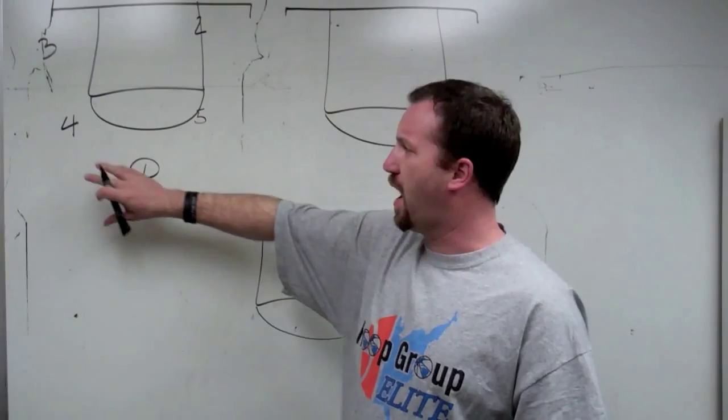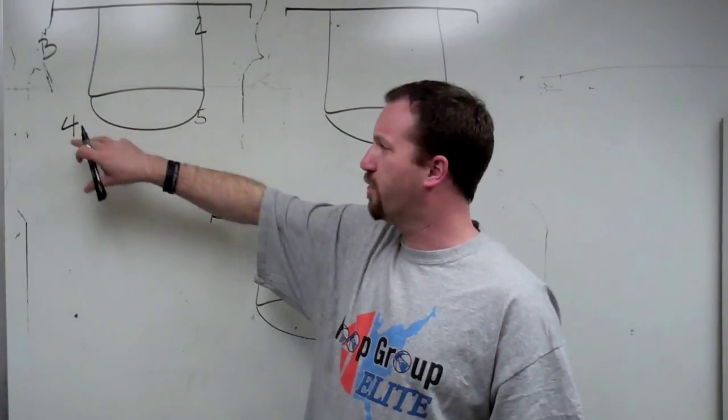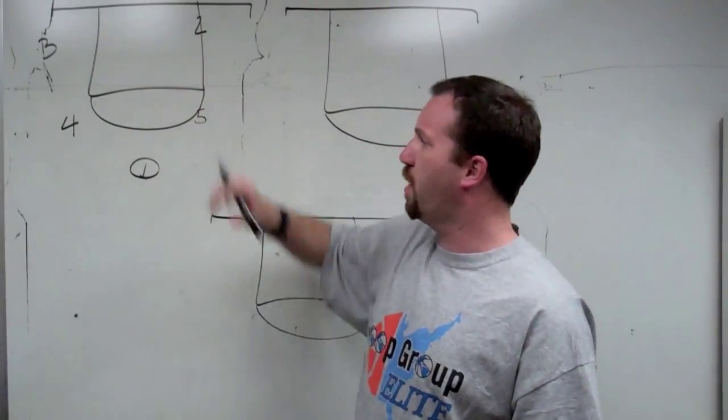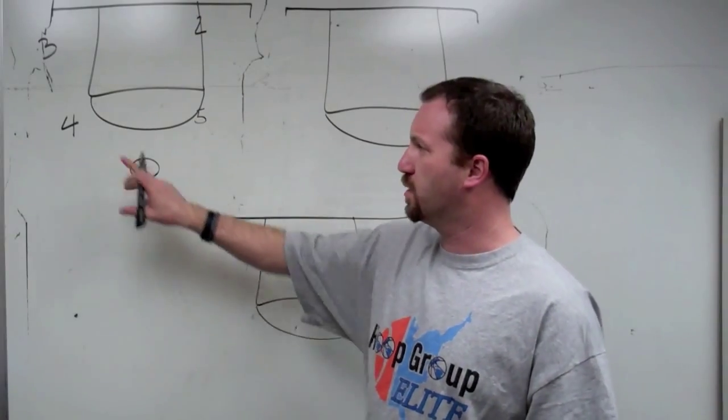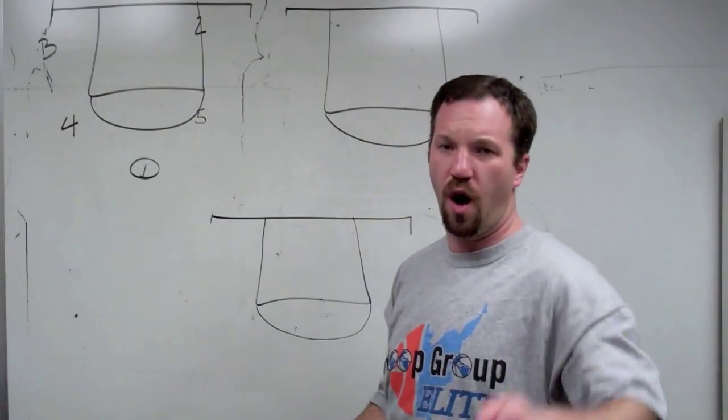Start out almost like a little bit of an off box set. Keep your four and five lifted, two-man down low on the low block, one-man with the ball up top, and keep the three out wide for spacing.